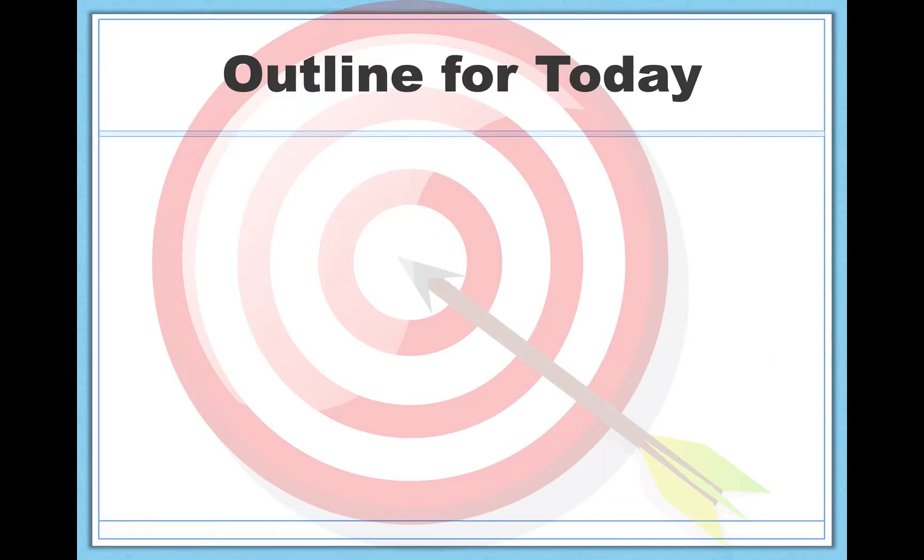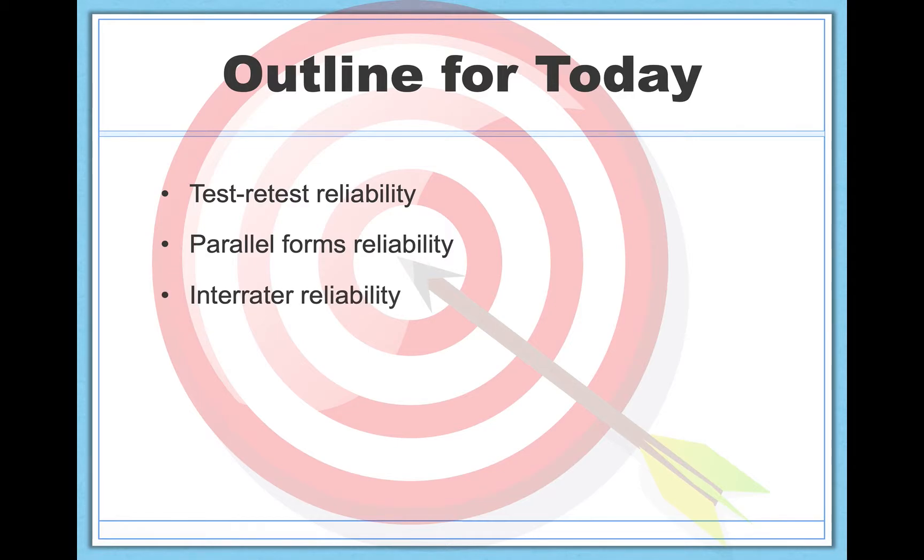So today, I'm going to talk to you about four different types of reliability, and you're going to see this idea of consistency of measurement underlying all of them, although they will take slightly different forms. First, we're going to talk about test-retest reliability. Next, we'll talk about parallel forms reliability. Then, inter-rater reliability. And finally, internal consistency, a little bit of a different one.